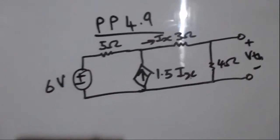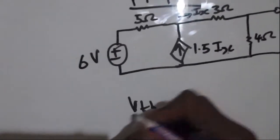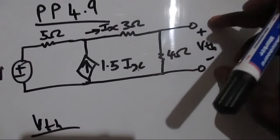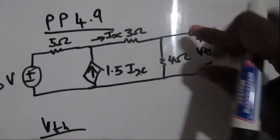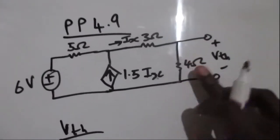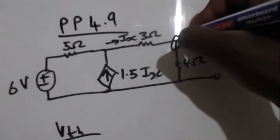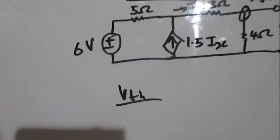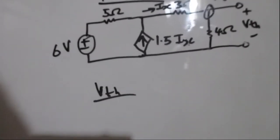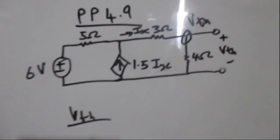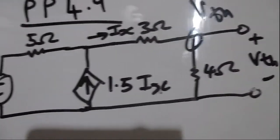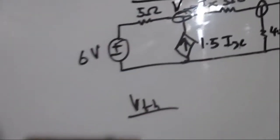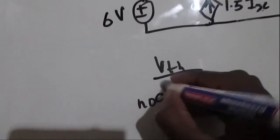Let's start by finding Vth. Vth is indicated at this point — it's essentially the voltage across this 4-ohm resistor, or the voltage at this node. The simplest way I'd go for is to do nodal analysis. Let's name this node V and do nodal analysis at node V.